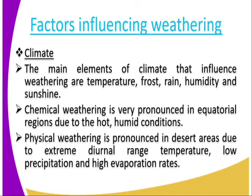Now we look at the factors that influence weathering. We have already covered the agents. Now, one of the factors is climate. We have already seen that heat and water are agents of weathering, and these come from the climate. The main elements of climate that influence weathering are temperature, frost, rain, humidity, and sunshine.